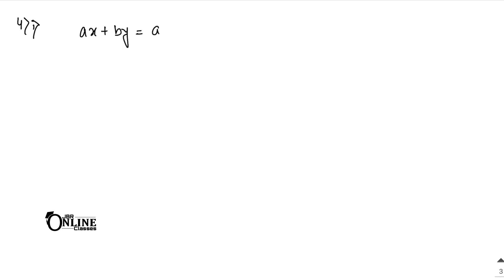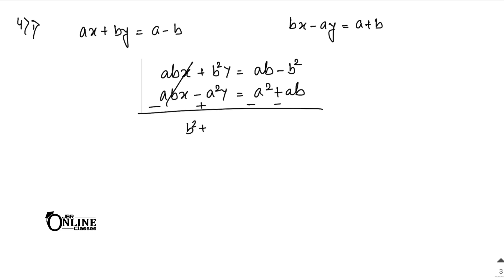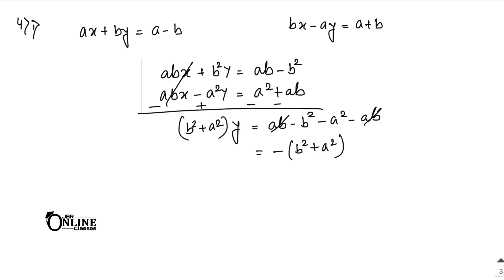Problem 4.1: ax plus by equals a minus b, and bx minus ay equals a plus b. Multiply equation 1 by b: abx plus b²y equals ab minus b². Multiply equation 2 by a: abx minus a²y equals a² plus ab. Subtracting cancels abx, giving (b² plus a²)y equals ab minus b² minus a² minus ab, so (a² plus b²)y equals minus(a² plus b²), giving y equals minus 1.